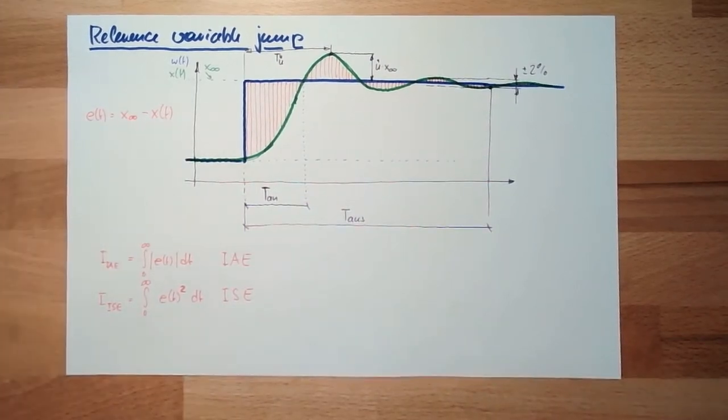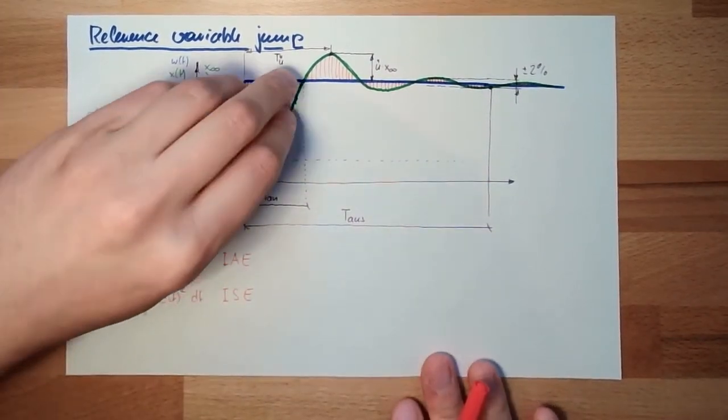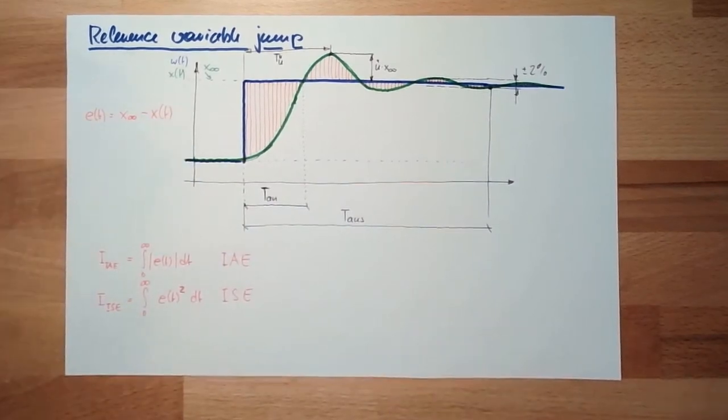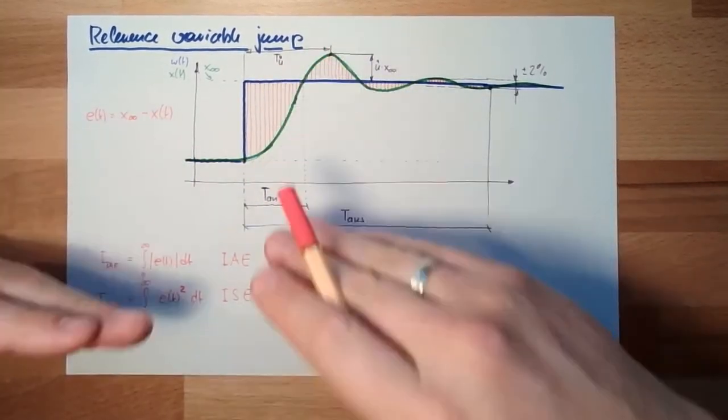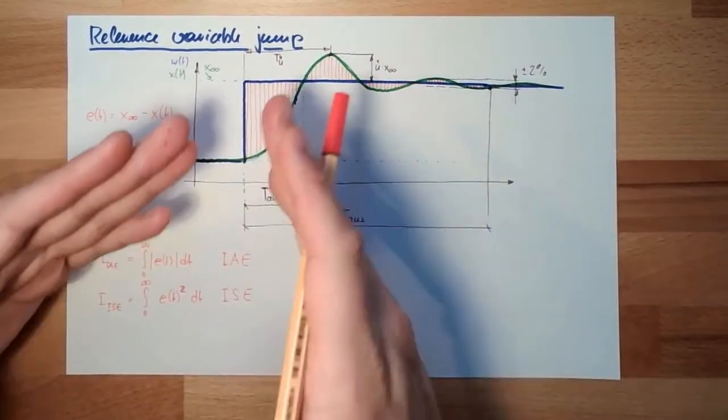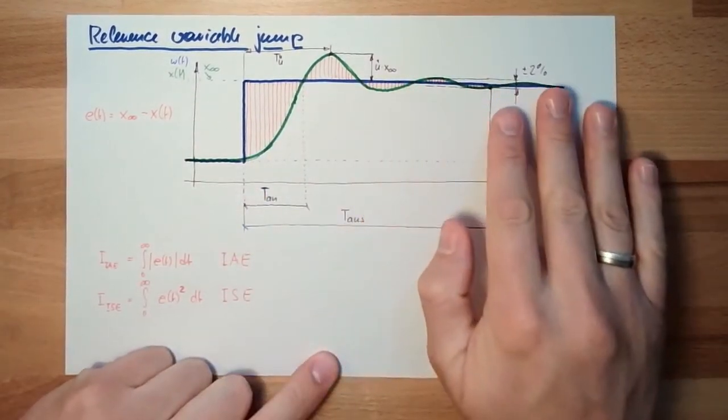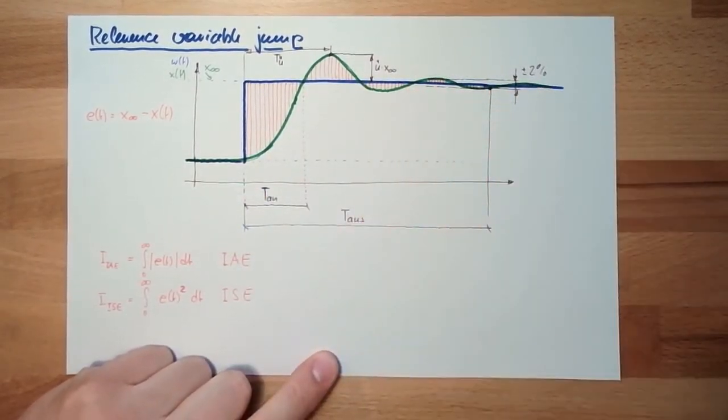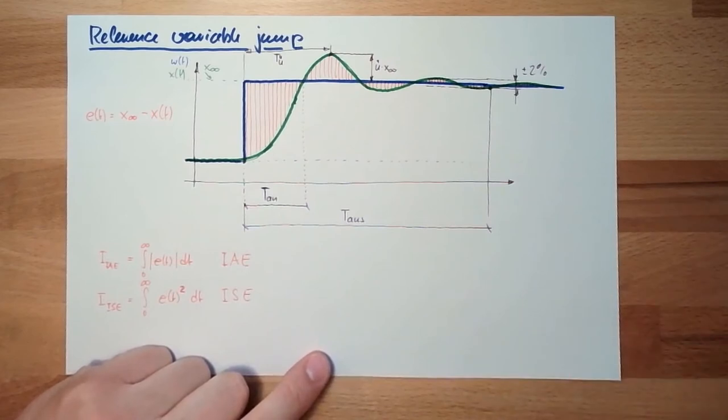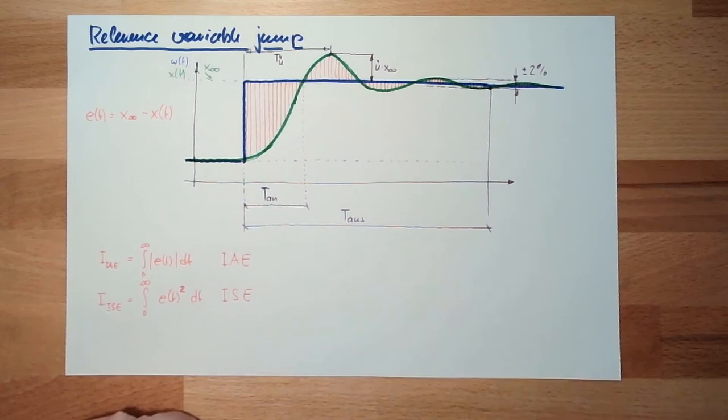Then we could say, okay, here at the beginning, okay, there must be an error, there must simply be an error. This is not that important. But here at the end, the longer it takes, the more severe I think are the errors. Also this is possible.